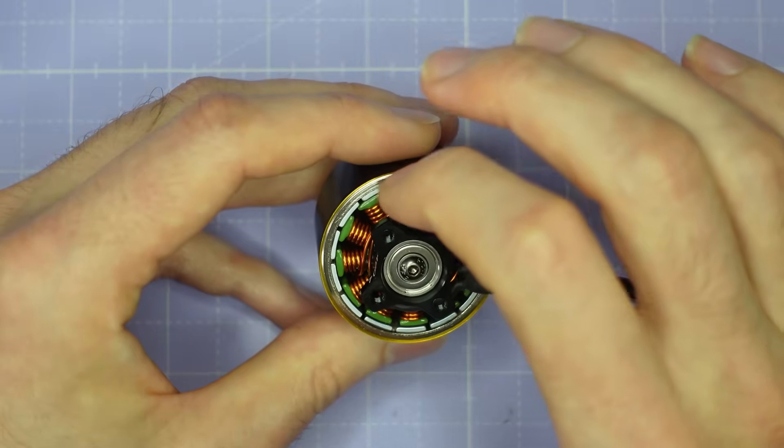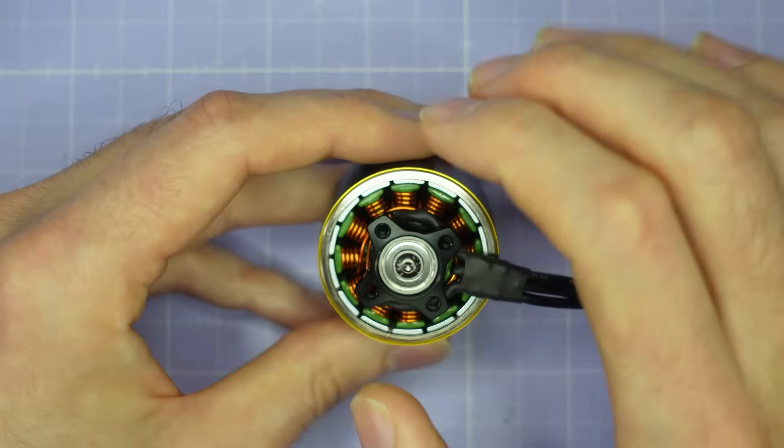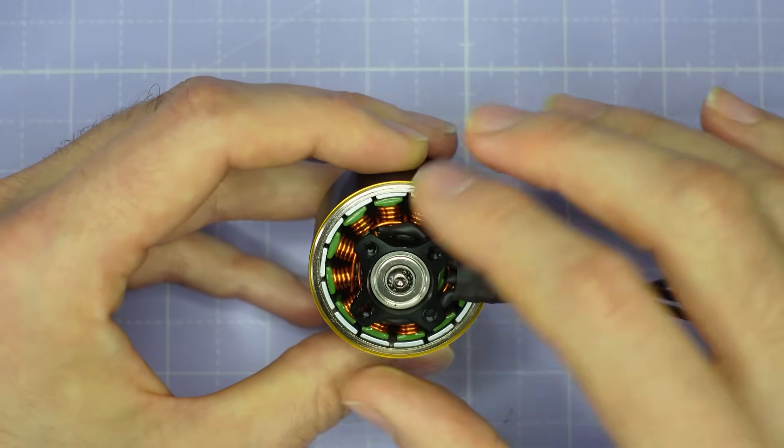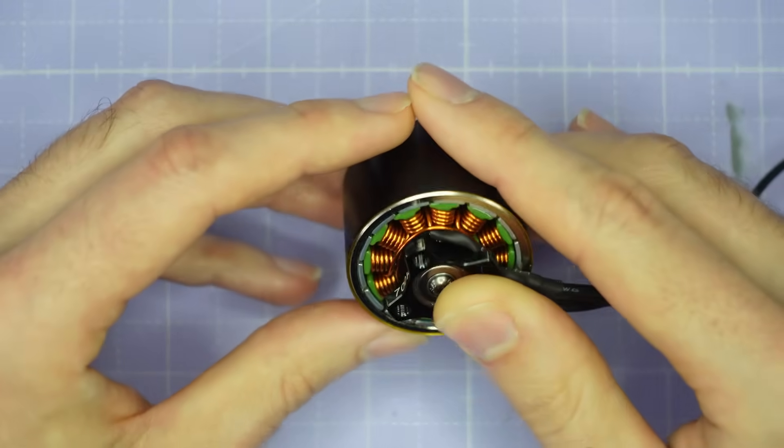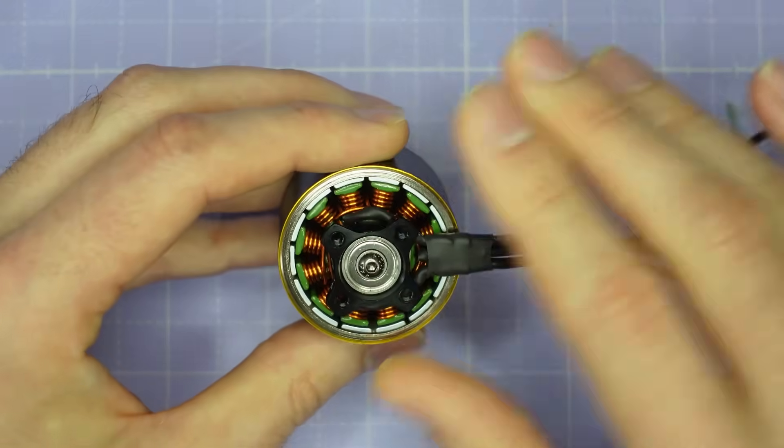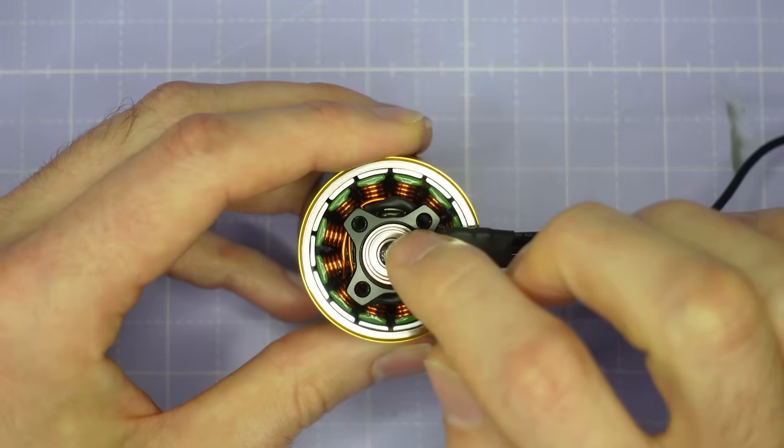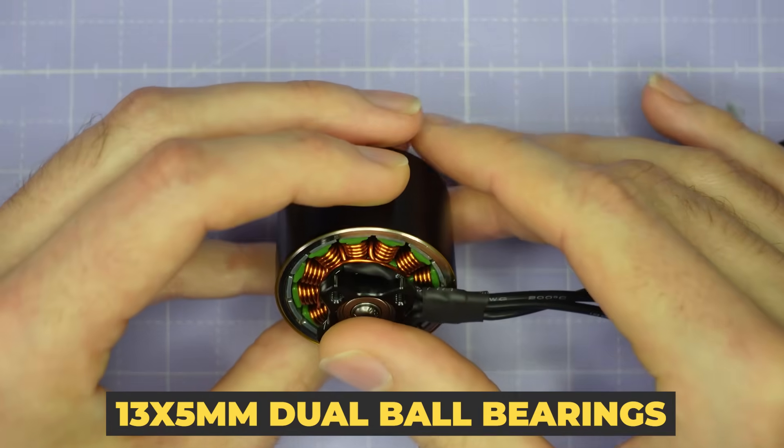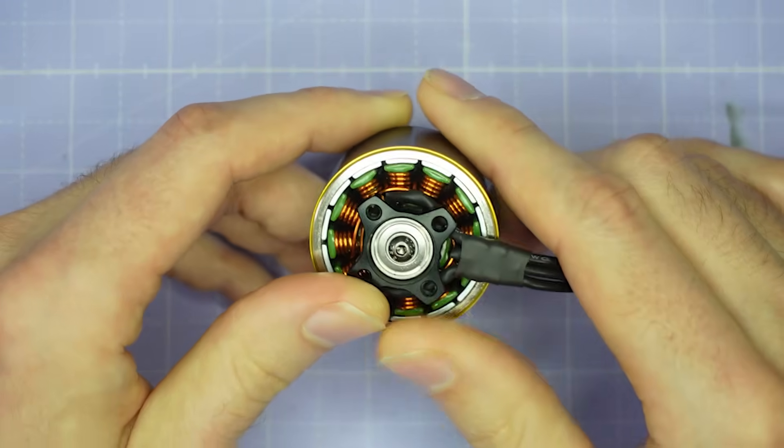The magnets are a custom arc magnet to get the maximum possible width again to kind of increase the field strength in the air gap and all of this together means that this motor provides significantly more torque and power than any other 3220 that's on the market right now. The bearings are 13 millimeter bearings so there are big chunky bearings to help deal with the large amount of force and torque that's going to be put through them.